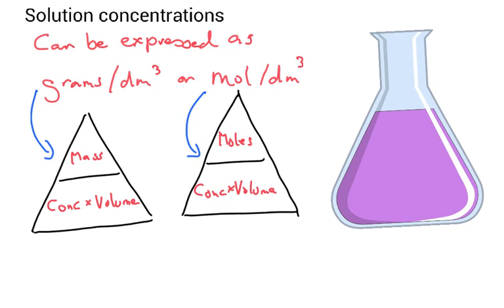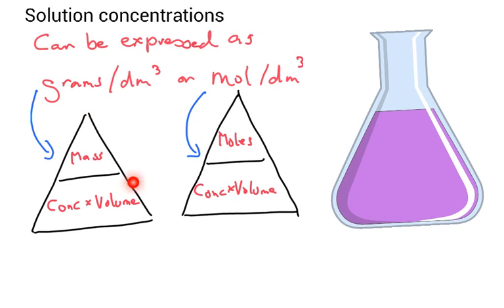Starting off with solution concentrations. These can be expressed in two different ways: you can be given grams per decimetre cubed or moles per decimetre cubed. To find the concentration in grams per decimetre cubed, you do mass divided by volume. More commonly, the concentration is given in moles per decimetre cubed — concentration equals number of moles divided by volume. This triangle makes life easier, but if you need to find the number of moles you'll need to do a conversion with the molar mass.